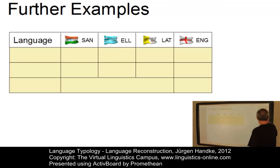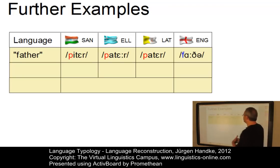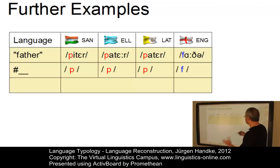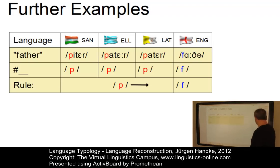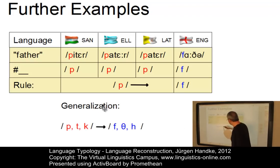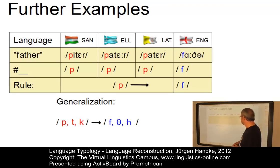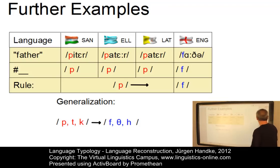In taking the word for 'father', we find: in Sanskrit 'pitār', in classical Greek 'patēr', in Latin 'pater', and in English of course 'father'. If we look at the initial elements, we have in the classical languages a bilabial plosive, and in English a labiodental fricative. Inspecting further data, we can generalize: if we have an initial voiceless plosive in one of the classical languages, we will get a fricative with the same or similar place of articulation in the Germanic languages.